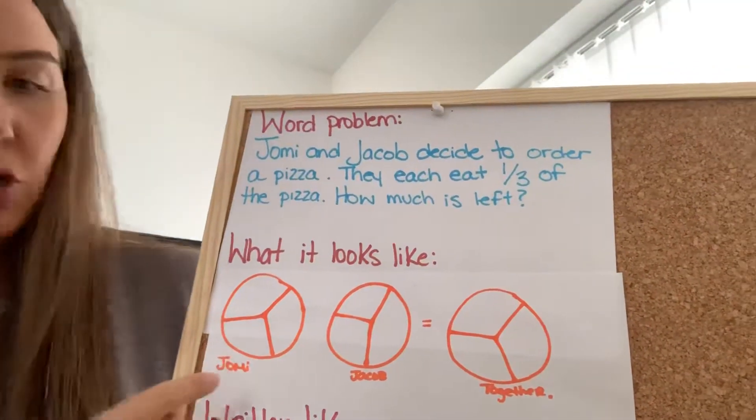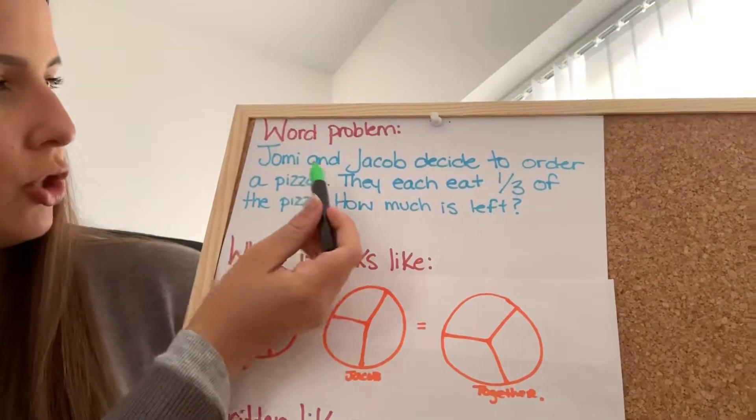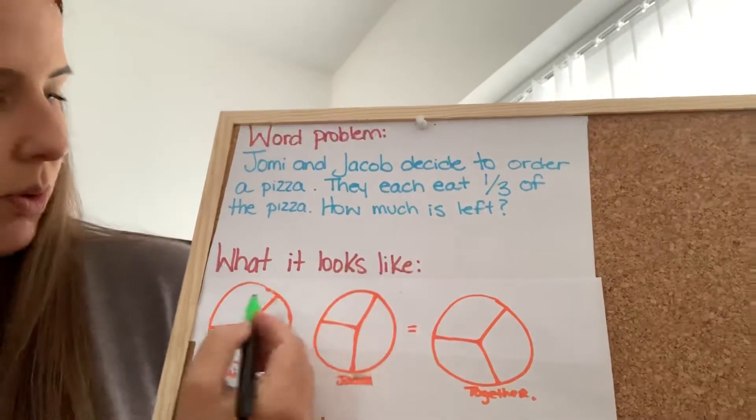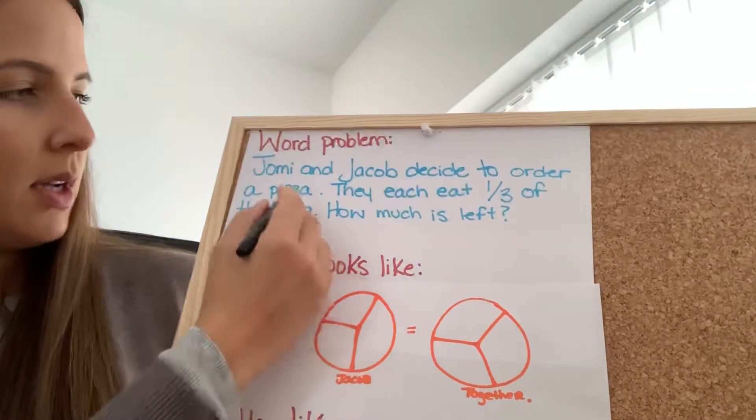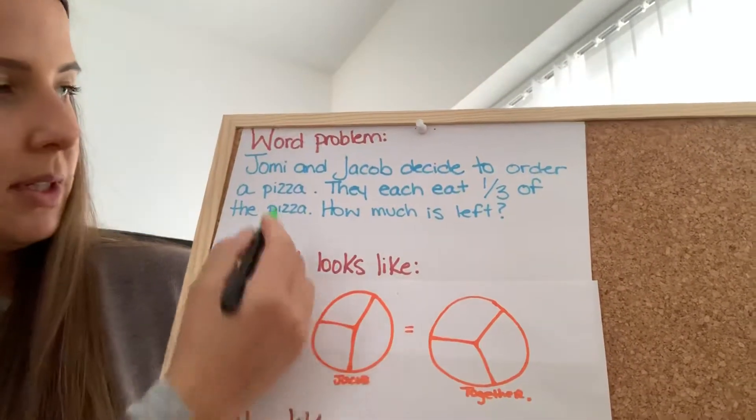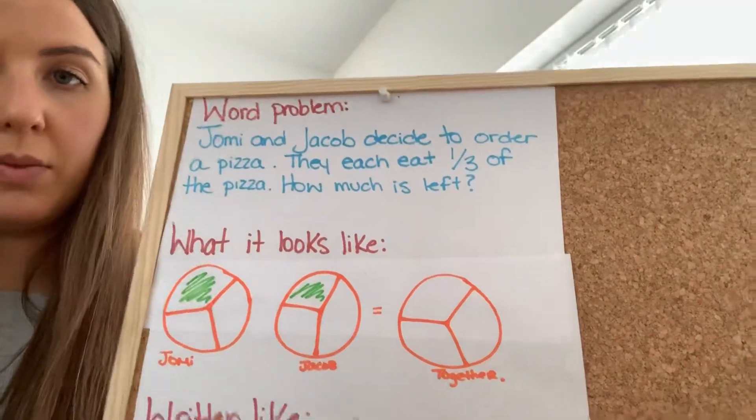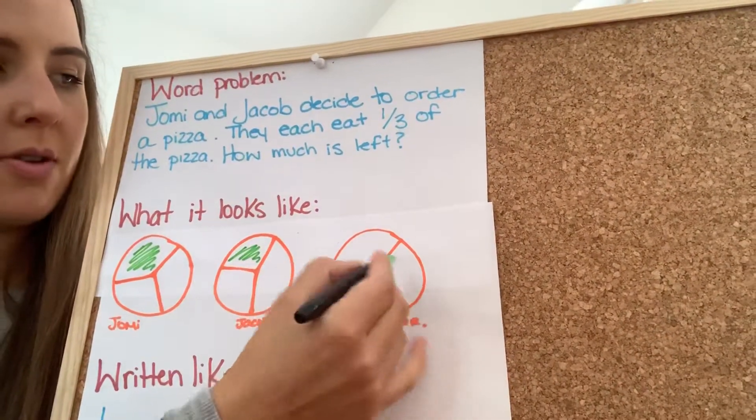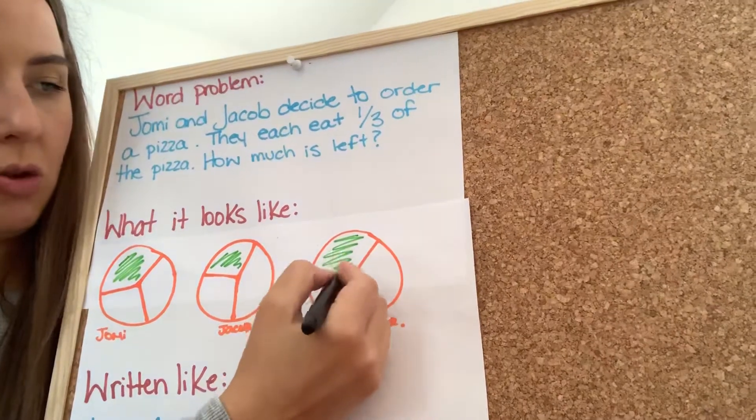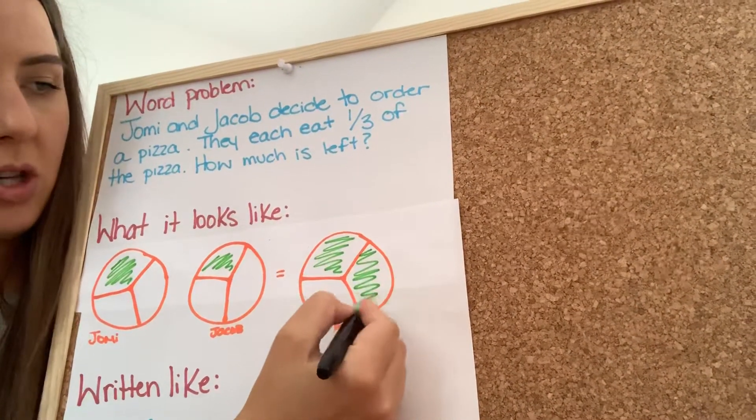So, here's Jomi's pizza. Jomi eats one-third. Jacob's pizza. Jacob also eats one-third. Okay. So, together, there's Jomi's slice. There's Jacob's slice.